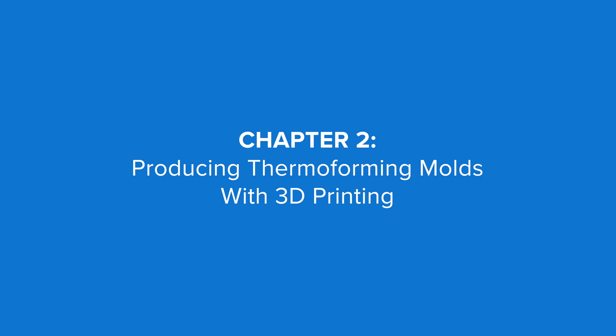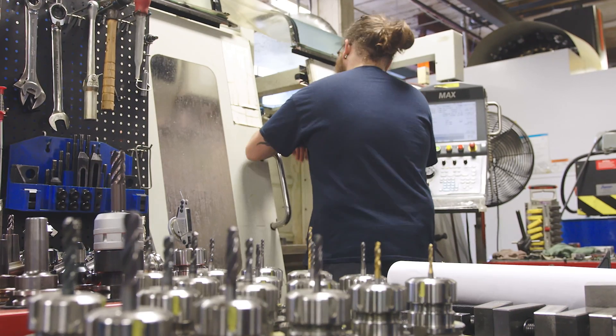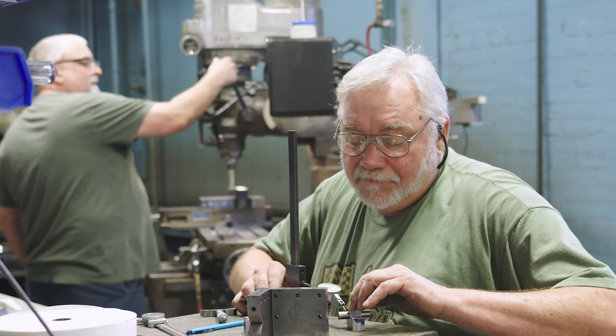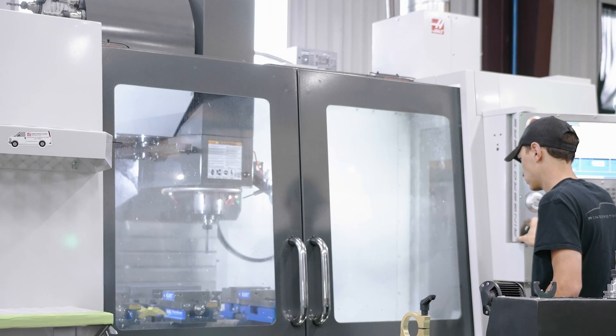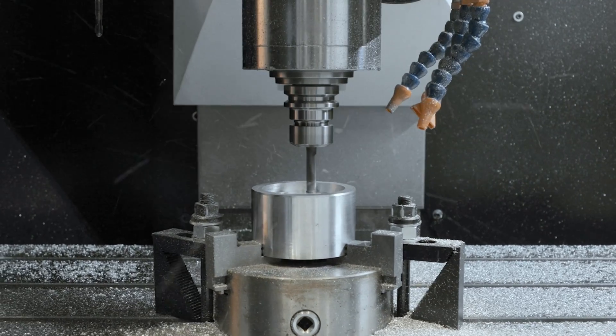Thermoforming molds are traditionally machined out of aluminum, wood, or composite board. When done in-house, these methods are labor-intensive and require expensive equipment, while outsourcing mold creation comes with weeks of lead time and high costs.